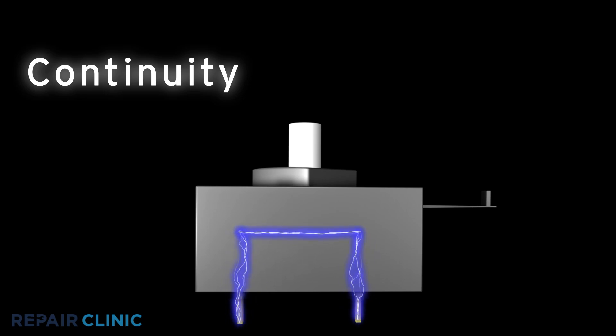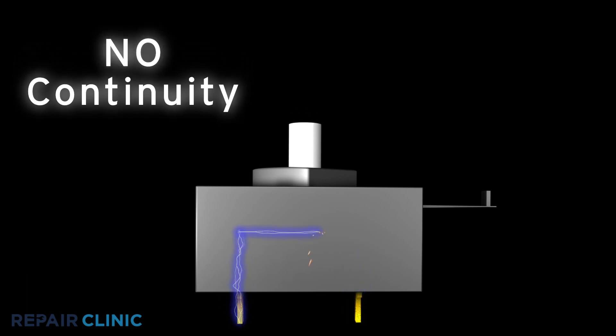If the switch has continuity, it should be functioning properly. No continuity means the electrical path is broken and the switch has failed.